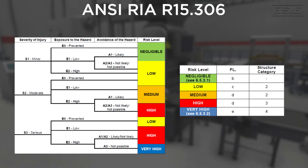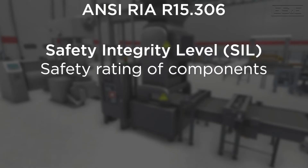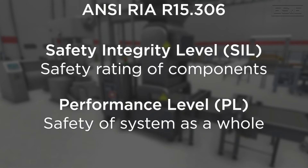Once the assessment is completed and the risk level is identified, you can quickly move to determine the category rating the system needs to be designed to, as well as the performance level that will need to be attained when the system is implemented. For people who are not familiar with safety, a simplified way of understanding a category is the way that the system is designed. A safety integrity level, or SIL, is the component's safety rating, and a performance level is what is achieved after the system is designed and installed with the proper SIL-rated components.